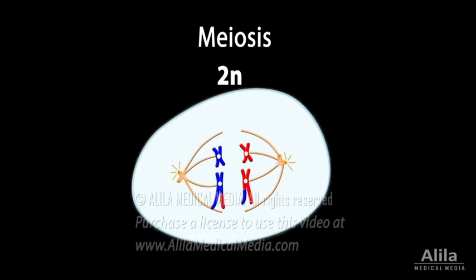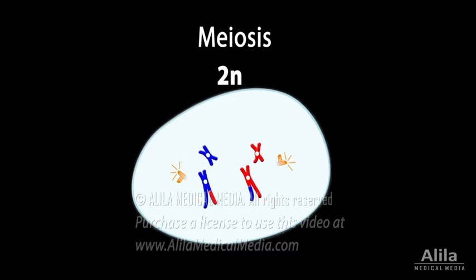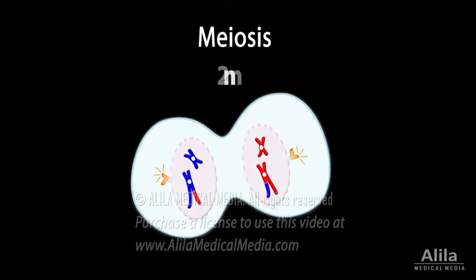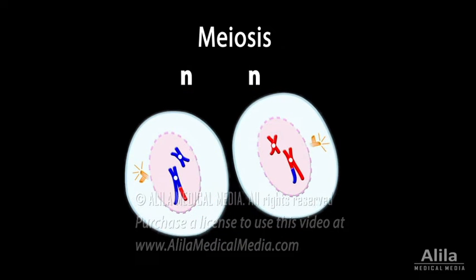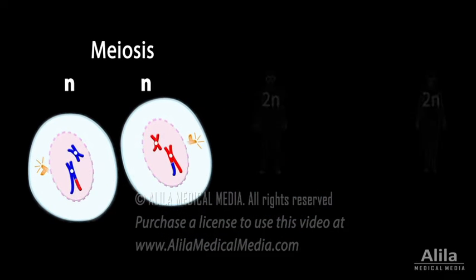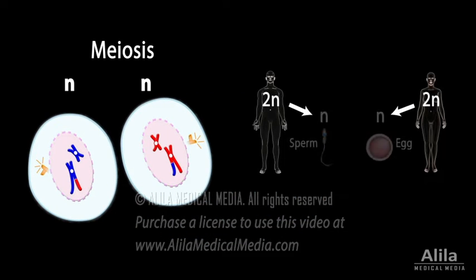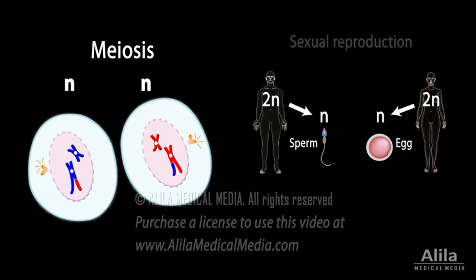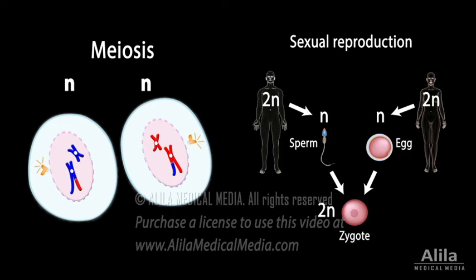Meiosis is a type of cell division that reduces the number of chromosomes in the parent cell by half. It underlies the production of eggs and sperm for sexual reproduction. The number of chromosomes is restored in the offspring when the egg and sperm combine during fertilization.